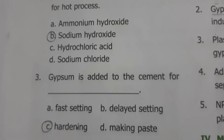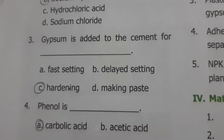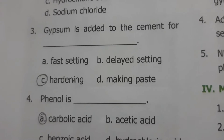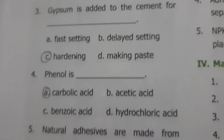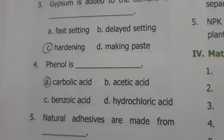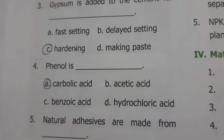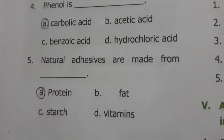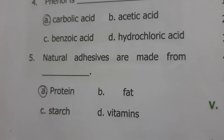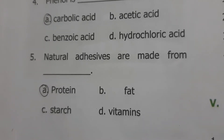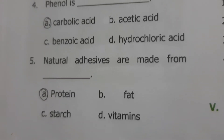Gypsum is added to the cement for hardening. Phenol is carbolic acid. Natural adhesives are made from protein.